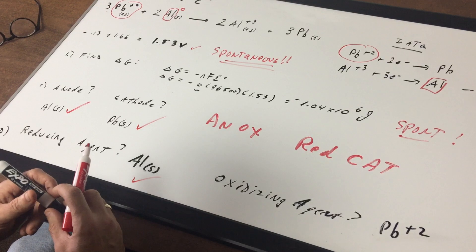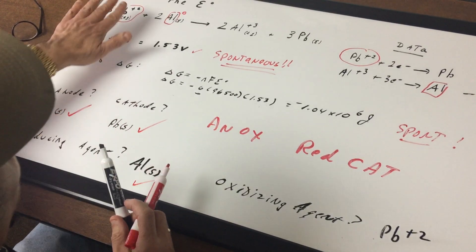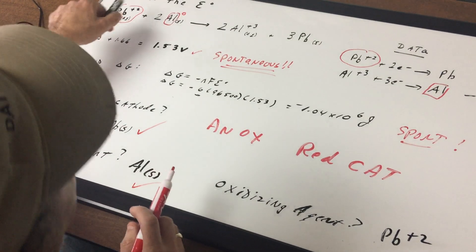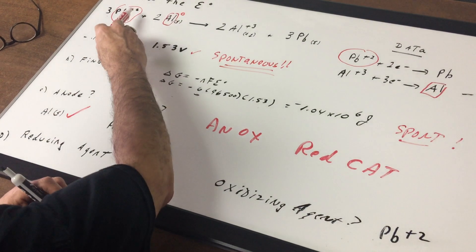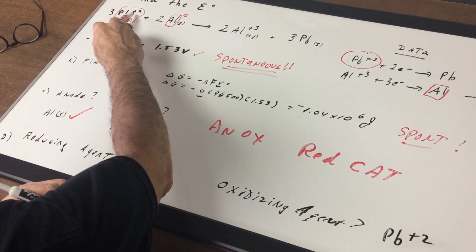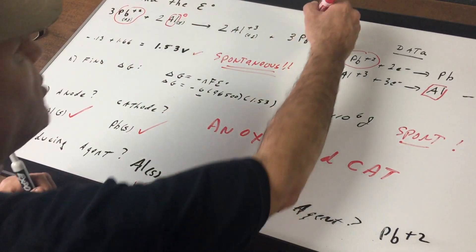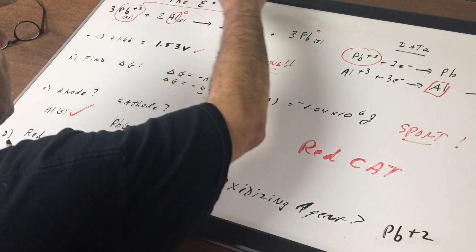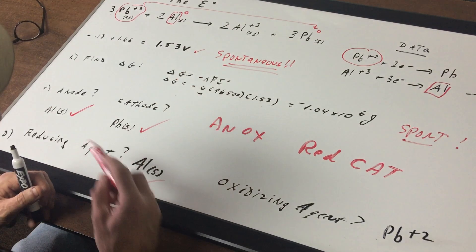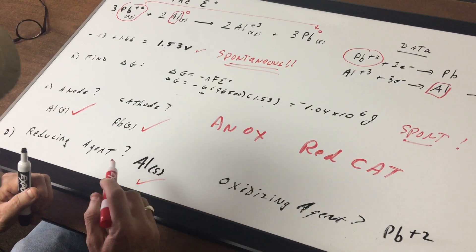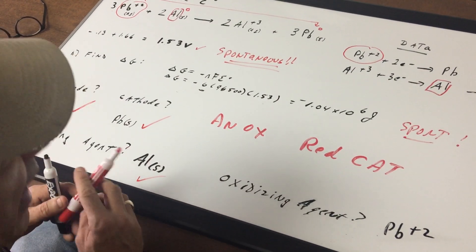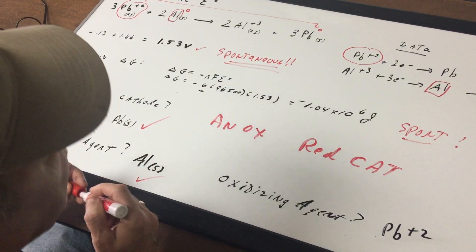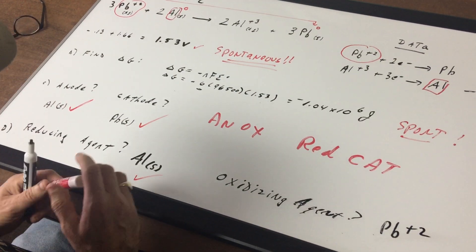And the oxidizing agent is that substance being reduced. We always look on the left side since the reaction is going from left to right and you can see that lead plus two is being reduced. If you want to put your little zero in, that's fine. It's going from plus two to a zero, so that means that Pb+2 is being reduced and it's the oxidizing agent.